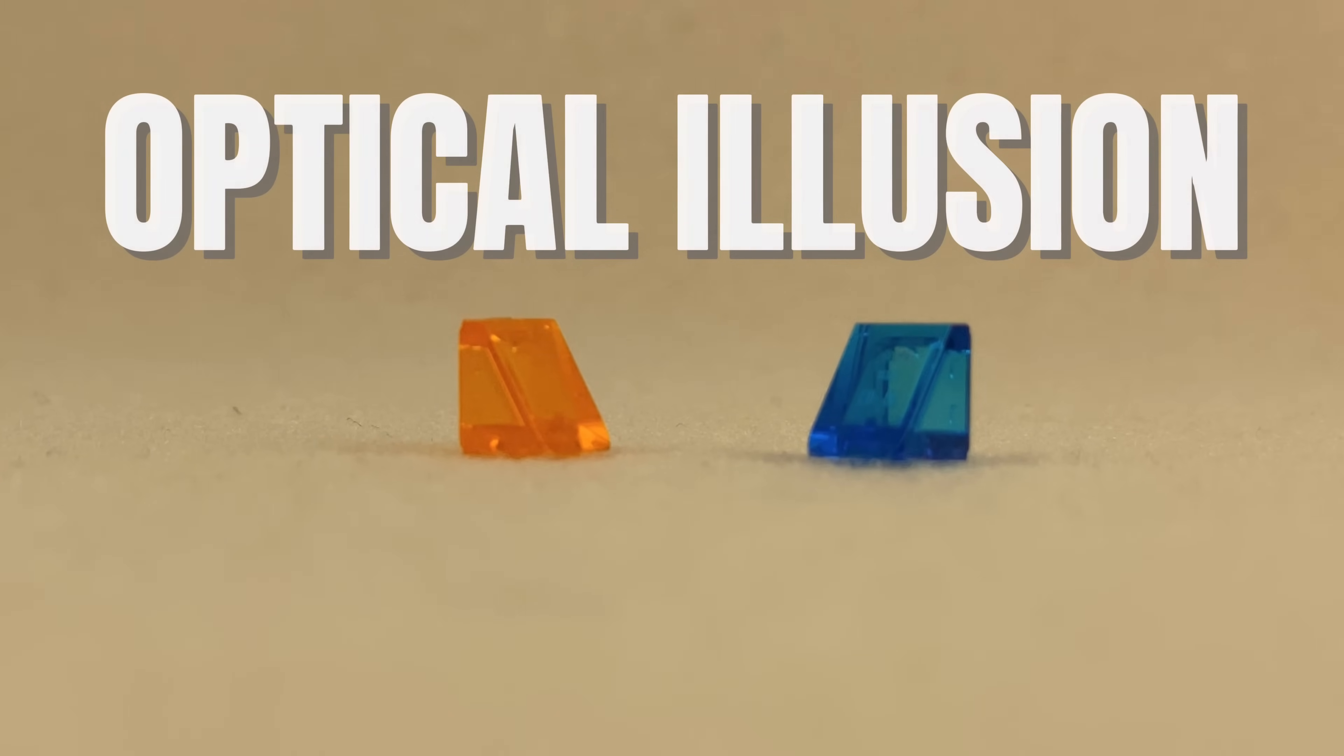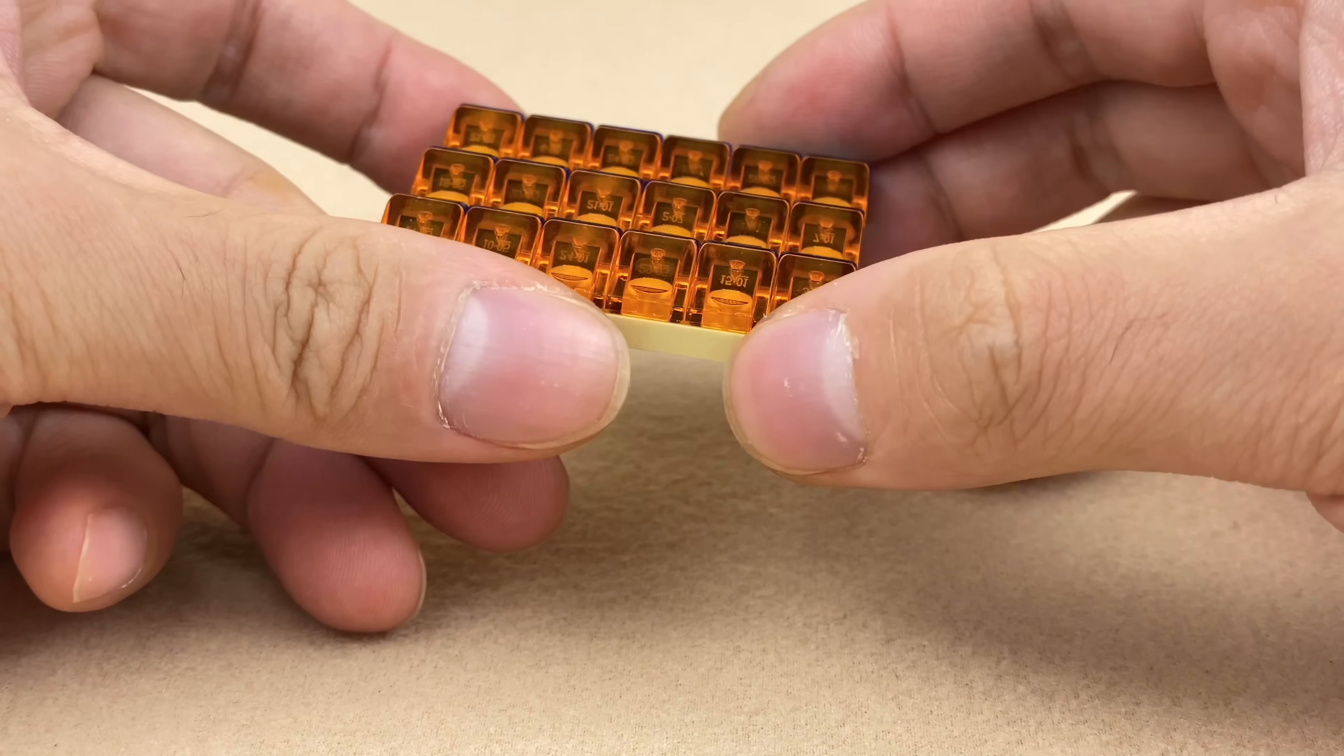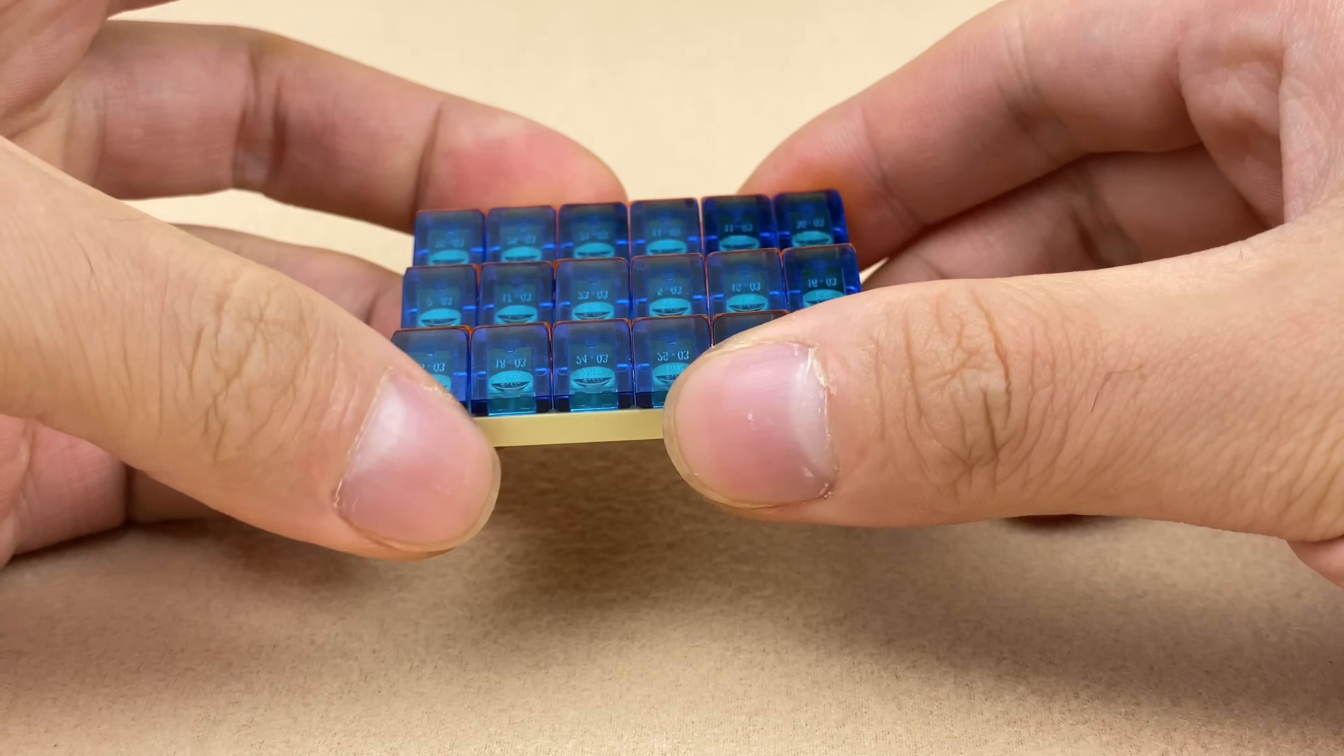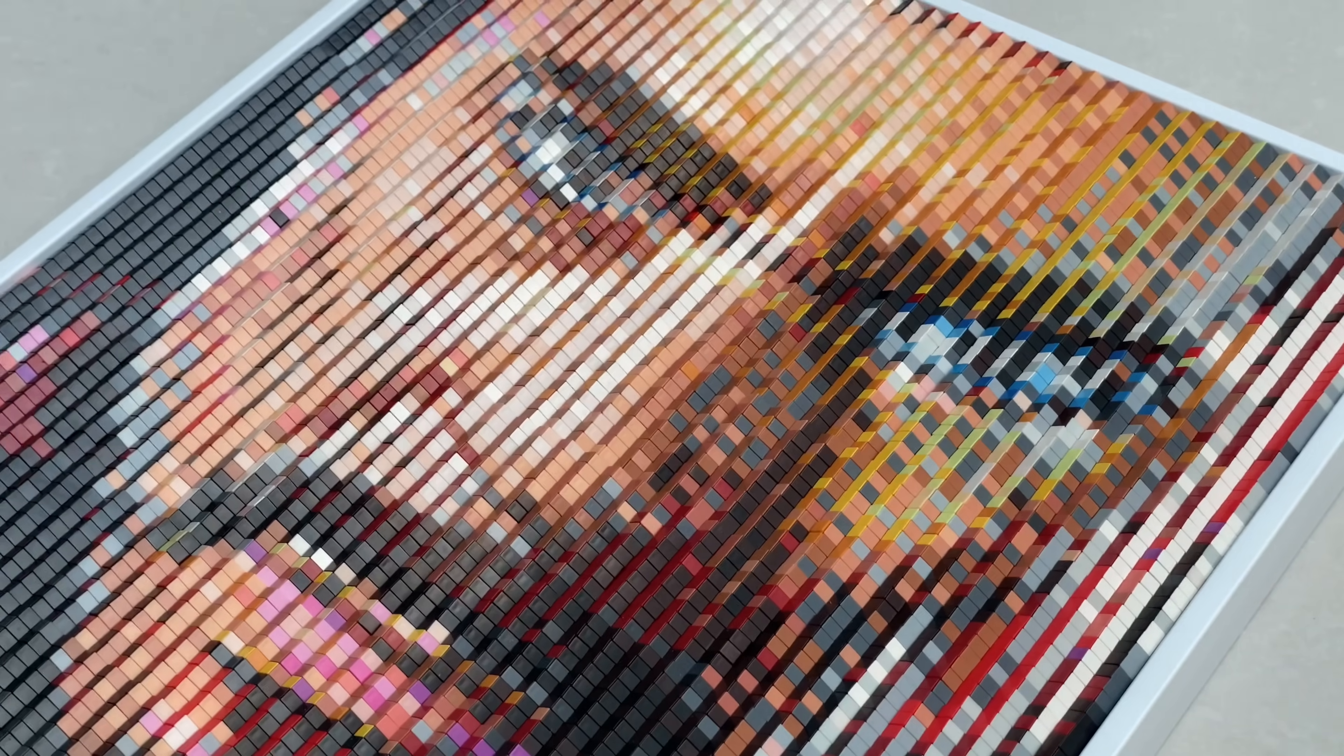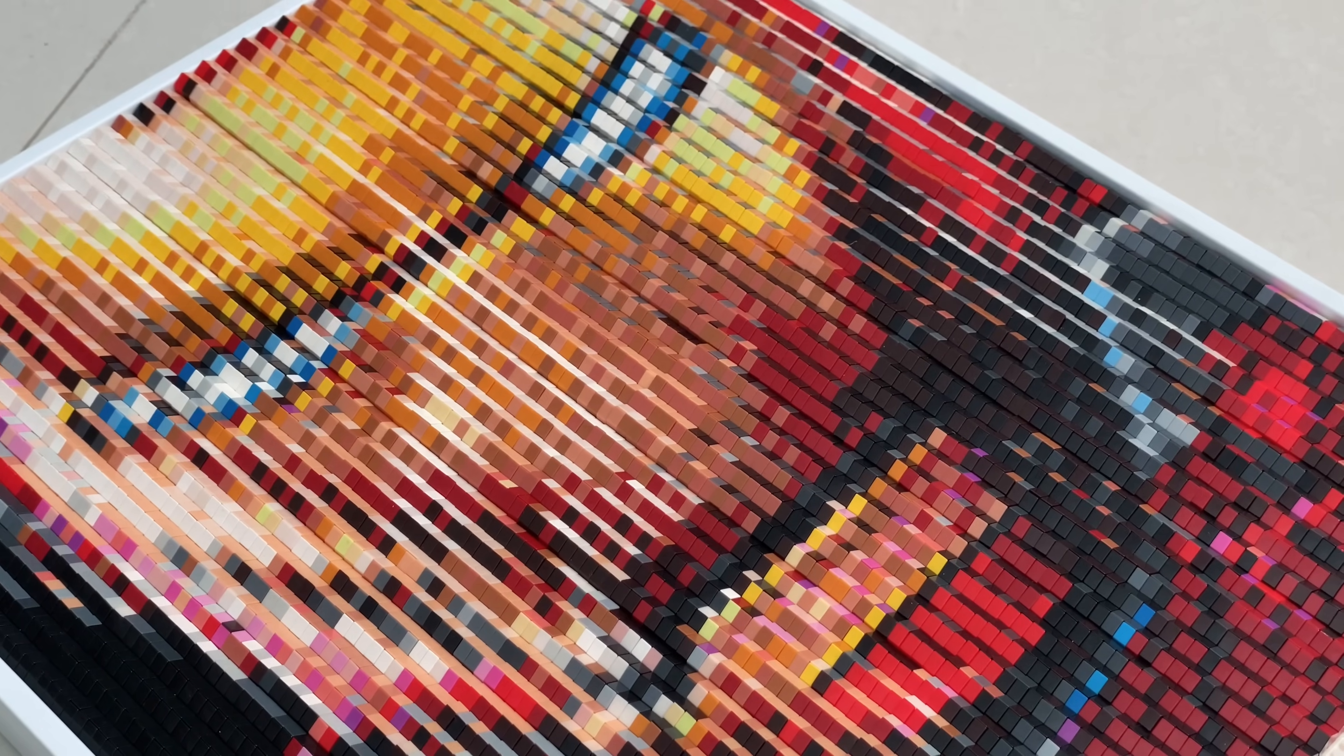Lastly, let's explore a LEGO optical illusion. When viewed from the left, it appears entirely orange. However, from the right, it transforms into blue. By using this principle on a larger scale, you can create a lenticular mosaic painting resembling Tony Stark from one angle and Iron Man suiting up from another.